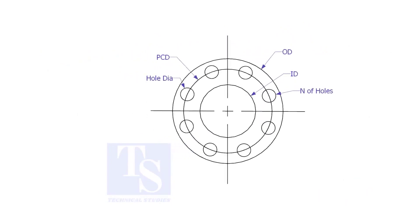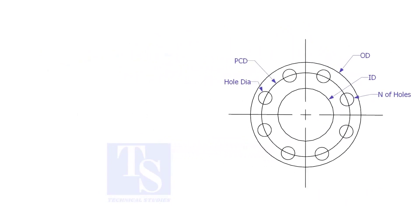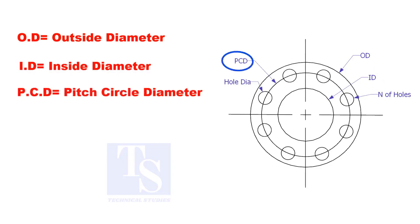To make a plate flange, we need to know the following things: OD, the outside diameter; ID, the inside diameter; PCD, the pitch circle diameter; number of holes; and the hole size.